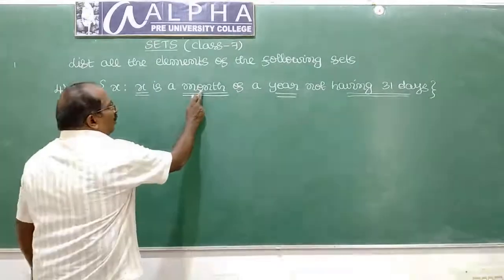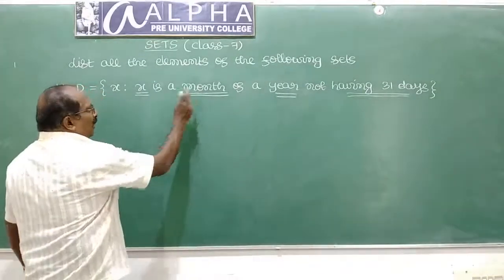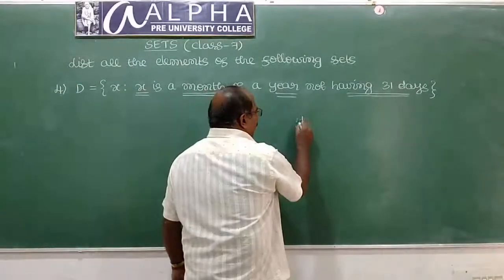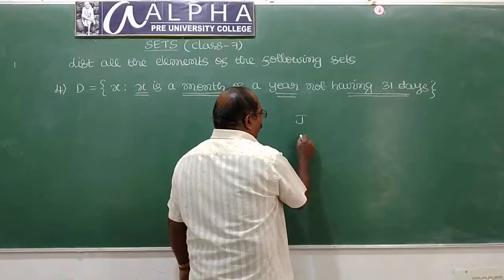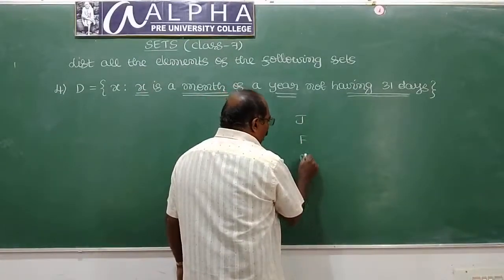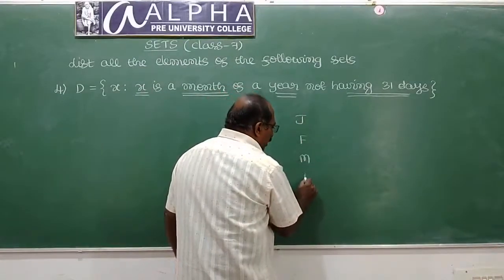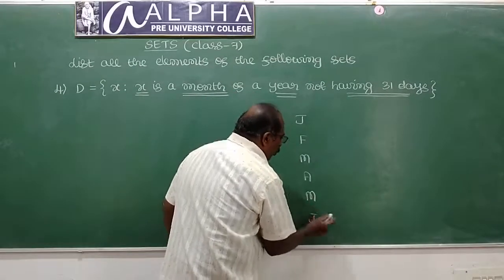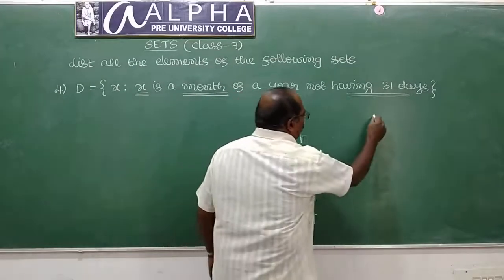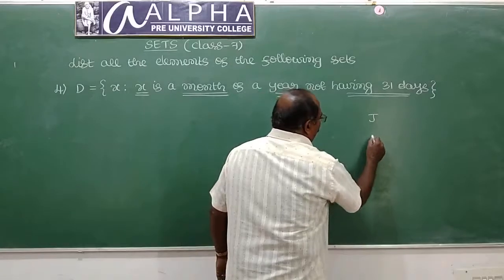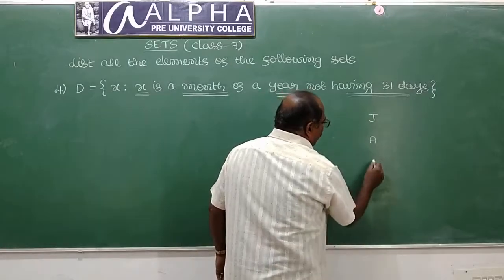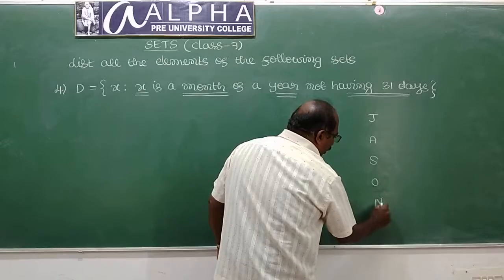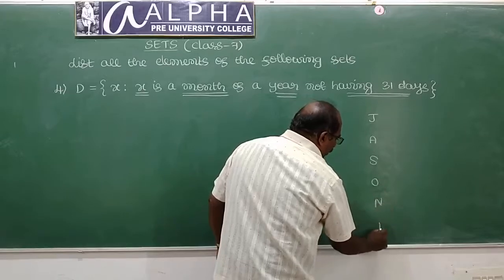Students, you know there are 12 months of a year: January, February, March, April, May, June, July, August, September, October, November, December.